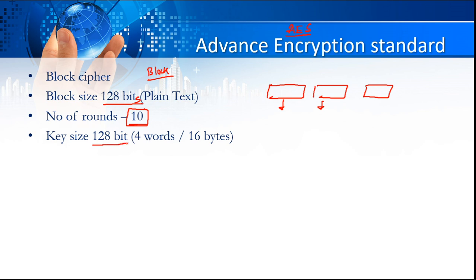The next point is the key size. The total key size we use for AES — Advanced Encryption Standard — is 128 bits. The number of bits in the key is bigger compared to DES, because DES was using only 56 bits, whereas here we are using 128 bits. That's why it is strong enough and gives better security compared to DES.